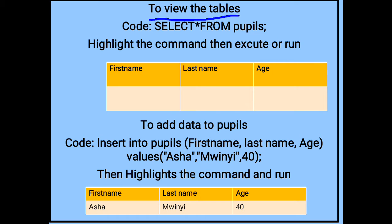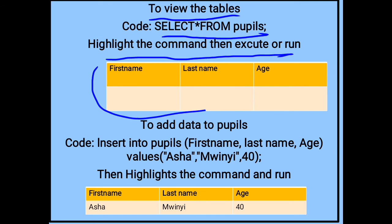After creating the table, to view the table you have created, use the following code: SELECT * FROM pupils. SELECT means choose or retrieve from the table name. Run the command then execute or run it, and the output will be shown on the table below.